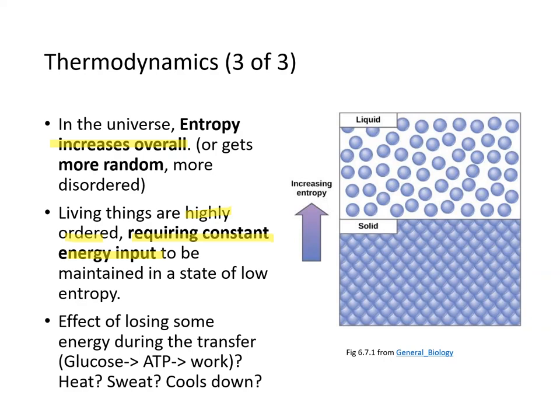Think about working out — when you use energy, your body heats up. Your body then produces sweat, and that sweat evaporates from your skin, cooling your body down. That's an example of a living system losing energy as heat.